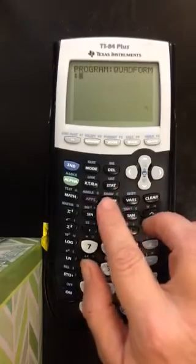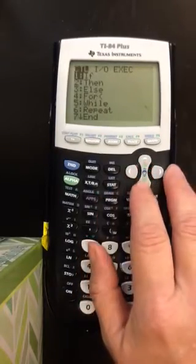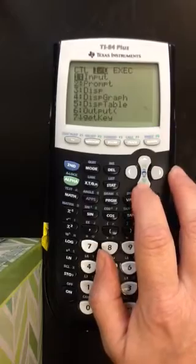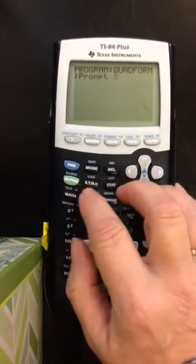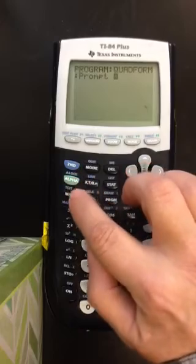So you're going to now go program, scroll over, and you want it to prompt you. And you want it to ask you for what A, B, and C are.